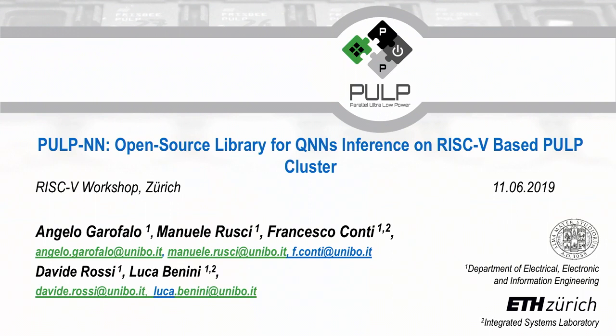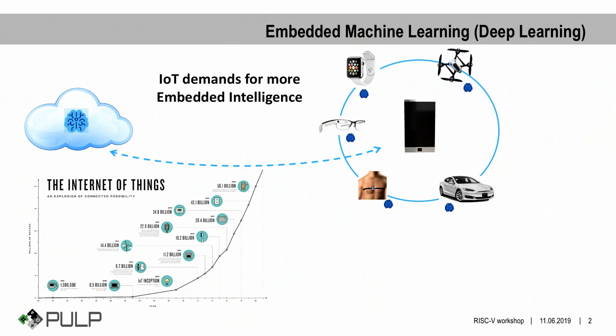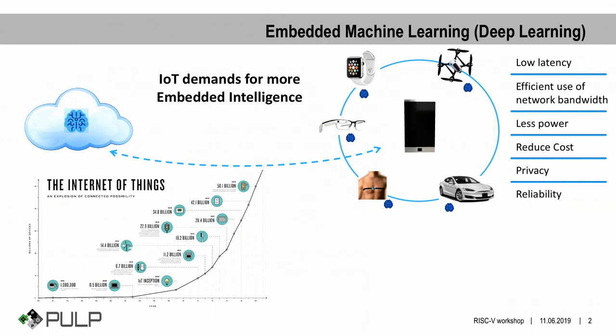I'm Angelo Garofalo, PhD student at the University of Bologna, and my talk is about the software solution to enable QNN inference at the edge of IoT on parallel ultra low power clusters of RISC-V based processors. To start, let's give a bit of context: the deployment of machine learning and deep learning algorithms at the edge is considered a key solution to meet the demand for embedded intelligence in modern IoT applications, and also to solve or reduce IoT network scalability issues.